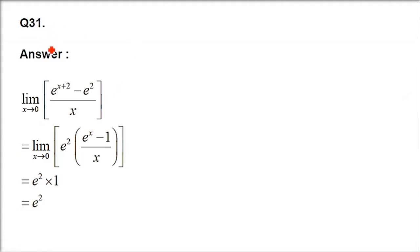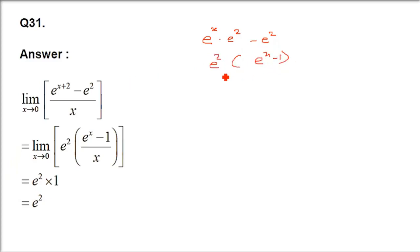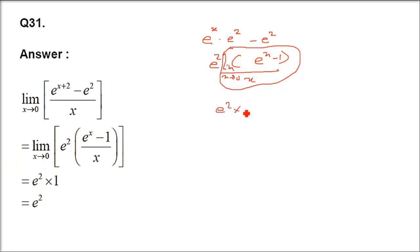Question 31: limit x→0 of (e^(x+2) - e²)/x. Write e^(x+2) = eˣ·e². So numerator = e²·(eˣ-1). Divide by x: e²·(eˣ-1)/x → e²·1 = e².